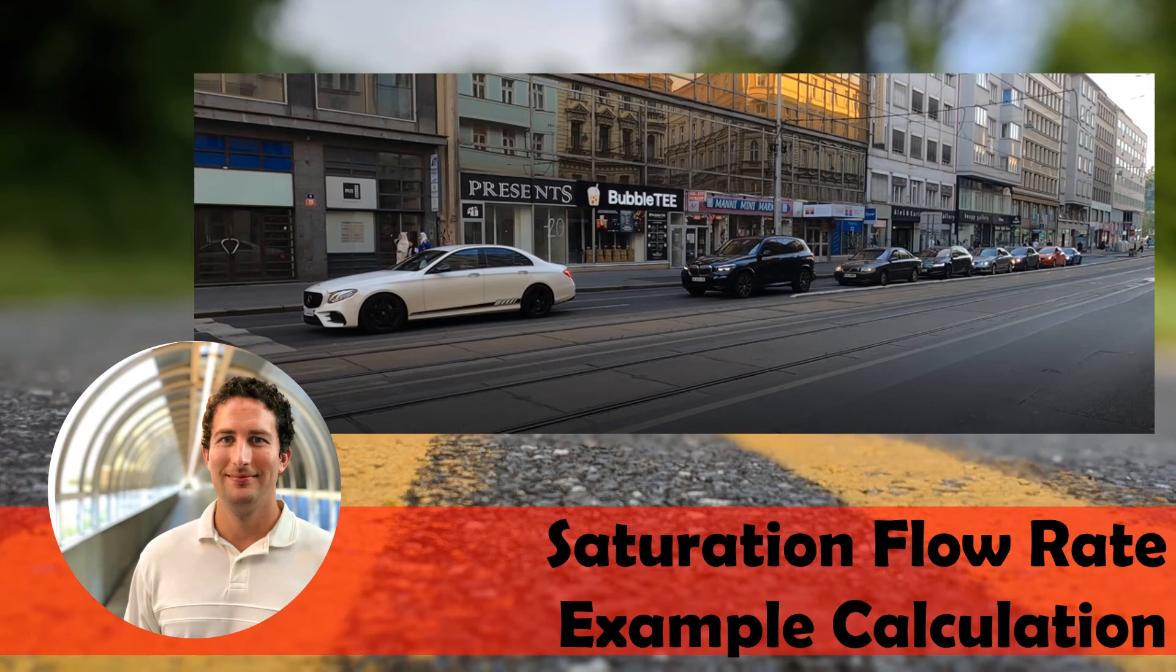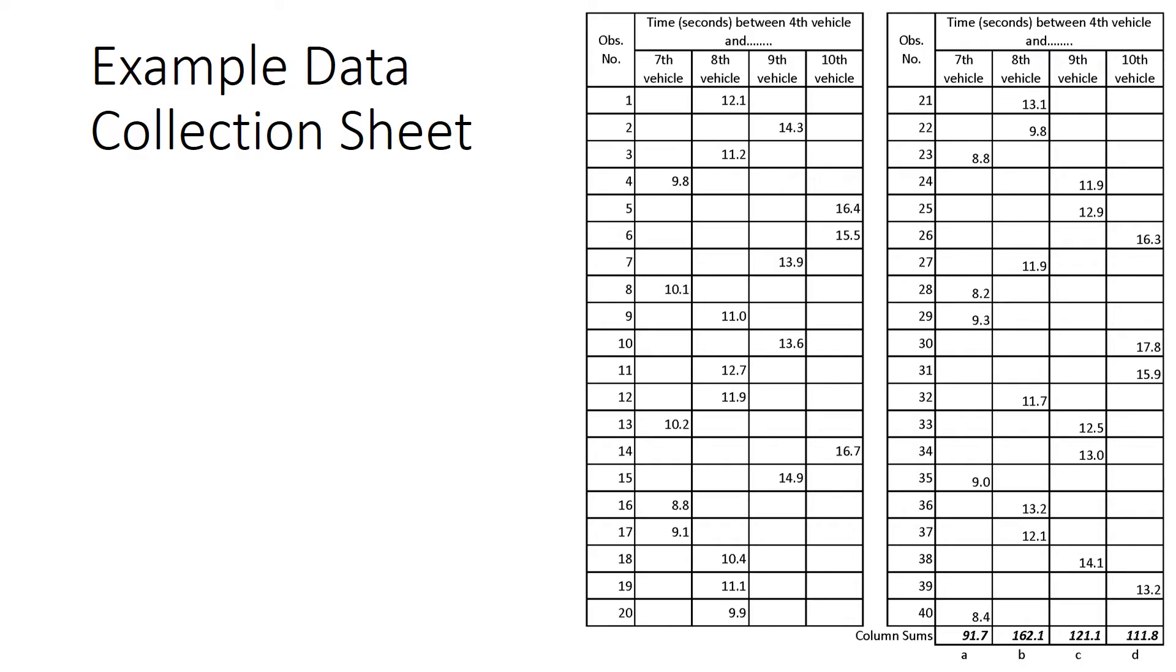Saturation flow rate is an important value in traffic engineering when we're analyzing the capacity of a signalized intersection. Here's an example data collection sheet with values for 40 observations, so each row is a different value, 1 through 40.